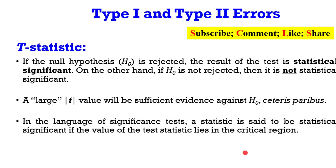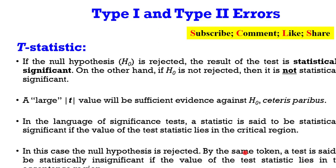In the language of significance testing, a statistic is said to be statistically significant if the null hypothesis is rejected. By the same token, a test is said to be statistically insignificant if the value of the test statistic lies in the acceptance region.